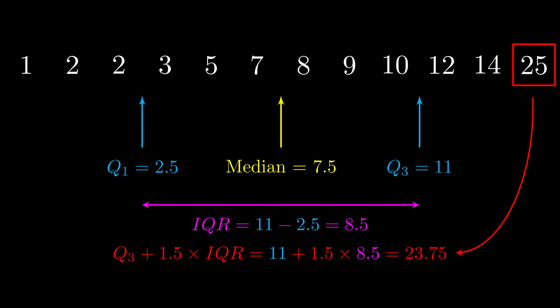And what that means is anything bigger than 23.75 is too big. We call that an outlier. So 25 is an outlier for this data set. So that's how we do quartiles, interquartile range. And that's how we identify when numbers are too big or too small, and we call them outliers. That's all for today. Thanks for watching. See you next time.